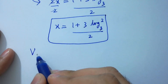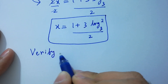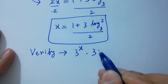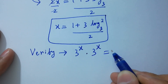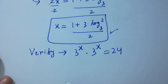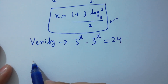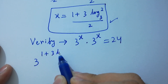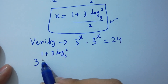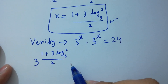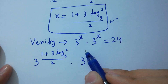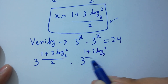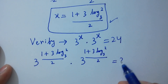Now let's verify. We substitute back: 3 to the power x times 3 to the power x should equal 24. With 2x equal to log 2 to the base 3, we get 3 to the power 1 plus 3 log 2 to the base 3, all over 2, equal to 24.